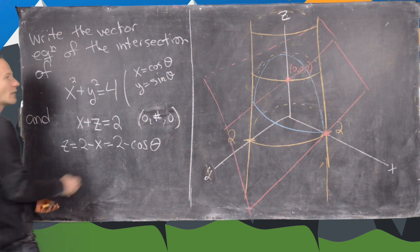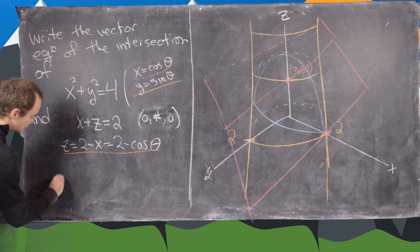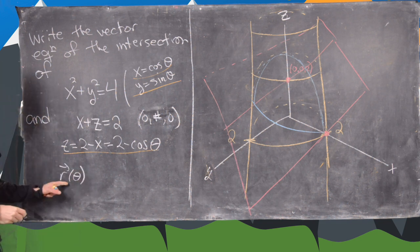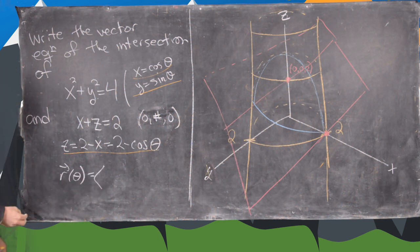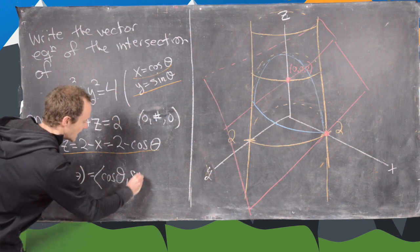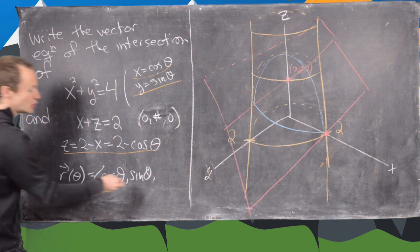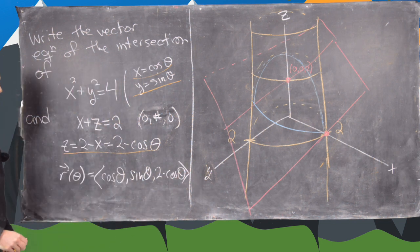And now we can just plug those into this equation and notice we'll get z equals 2 minus x which equals 2 minus cosine theta. But look, now we've got an equation for x, y, and z which allows us to write the equation of the curve as a function with variable theta as cosine theta, sine theta, and then 2 minus cosine theta. So those are the coordinates.